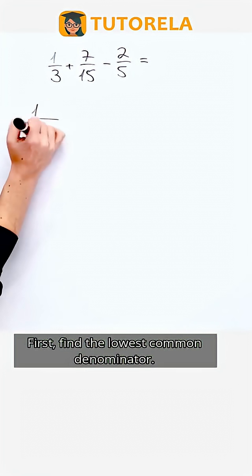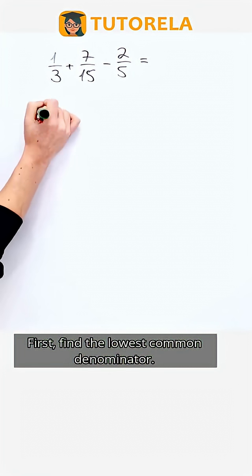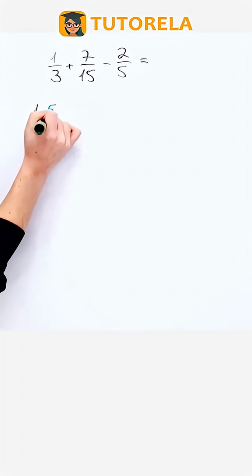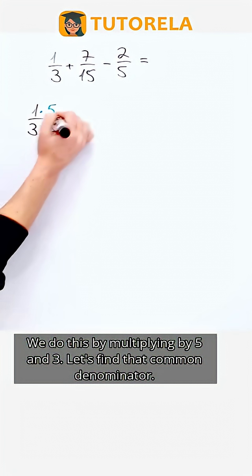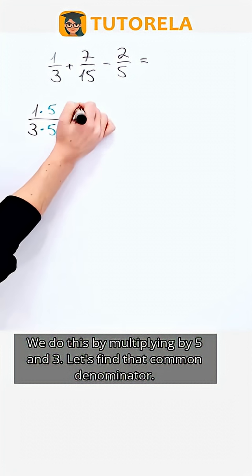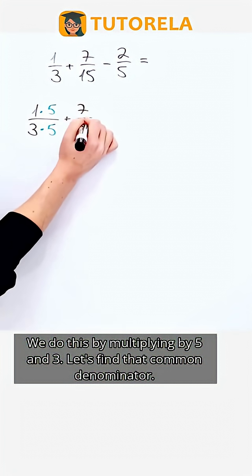First, find the lowest common denominator. We do this by multiplying by 5 and 3. Let's find that common denominator.